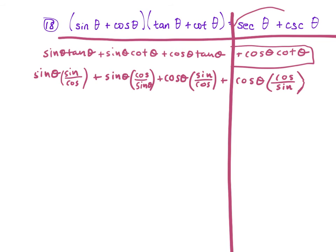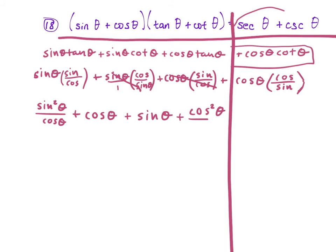Simplify each term: sine times sine/cosine gives sine² over cosine. Sine times cosine/sine — the sines cancel — gives just cosine θ. Cosine times sine/cosine — the cosines cancel — gives just sine θ. Cosine times cosine/sine gives cosine² θ over sine θ.